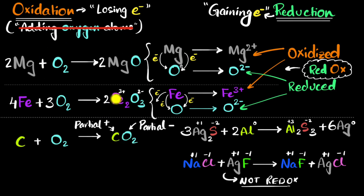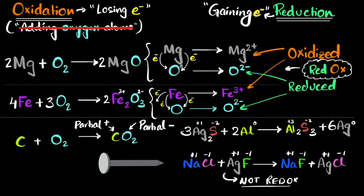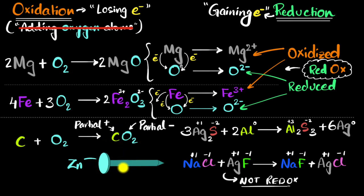Now that we understand what oxidation and reduction really is, here's an application. Now that we know rusting is basically iron losing electrons to oxygen, one way to prevent rusting is to coat it with a metal that loses electrons more readily compared to iron — one such example is zinc. If you coat an iron nail with zinc, it gives double protection: first it forms a barrier so oxygen can't reach iron, and the zinc gets oxidized. Even if there's a breach and iron is exposed, oxygen is much more likely to react with zinc because zinc more readily gives out its electrons. So using this knowledge, we can protect our precious iron from getting rusted.